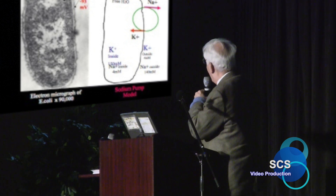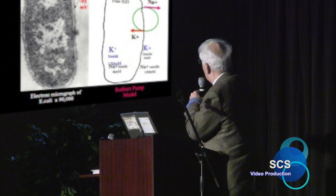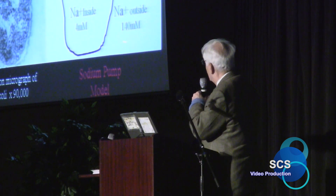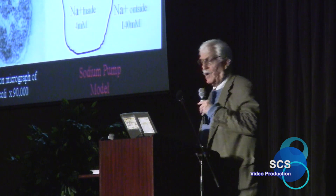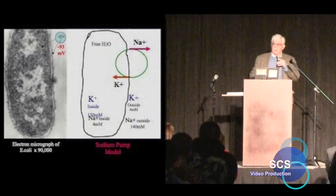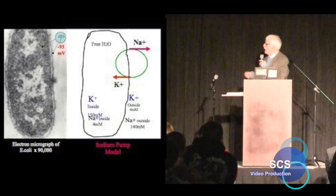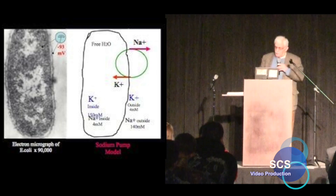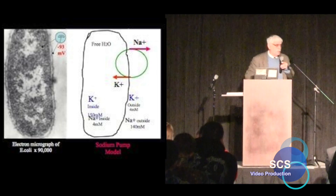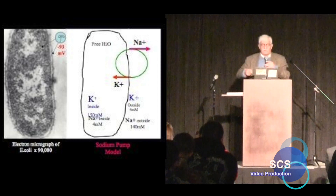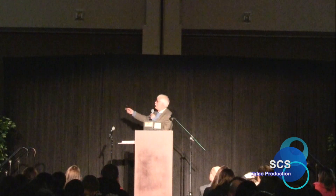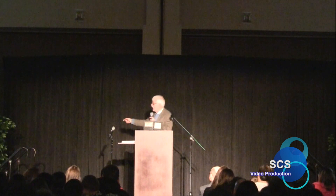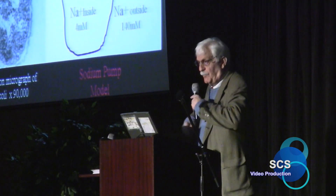The curious thing was that outside the cell you had the opposite — sodium, another atom with a one-plus charge, 140 on the outside and only 4 on the inside. Why potassium and not sodium? Initially people were puzzled, and somebody from Hodgkin and Huxley's group said there must be on the surface of this cell a pump — a pump that pumps potassium in and sodium out.